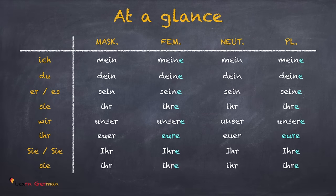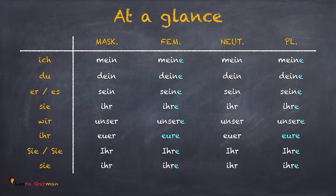Great! Here is a table for all the possessive pronouns we have just learned. Depending on the gender of the noun, you use either 'mein' or 'meine' for 'ich,' 'dein' or 'deine' for 'du,' 'sein' or 'seine' for 'er' and 'es,' and 'ihr' or 'ihre' for 'sie.' Do try to make your own sentences the way we did in the beginning of the chapter.